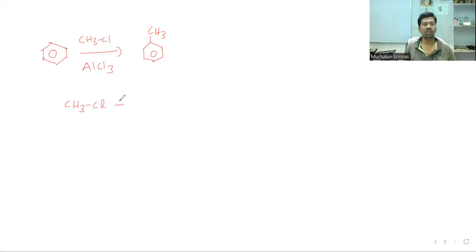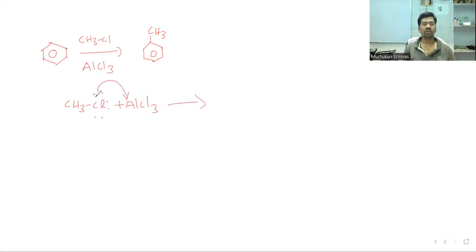For the mechanism: CH3Cl plus AlCl3 — the chlorine donates its electrons to aluminium. This generates a CH3⁺ carbocation and an AlCl4⁻ anion. The CH3⁺ then attacks the benzene ring.